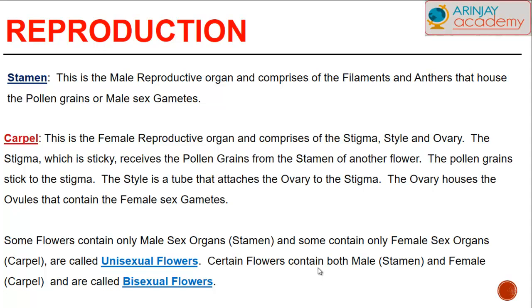Some flowers contain only male sex organs like the stamen, and some contain only female sex organs like the carpel — these are called unisexual flowers. Certain flowers contain both male stamen and female carpel organs and are called bisexual flowers.